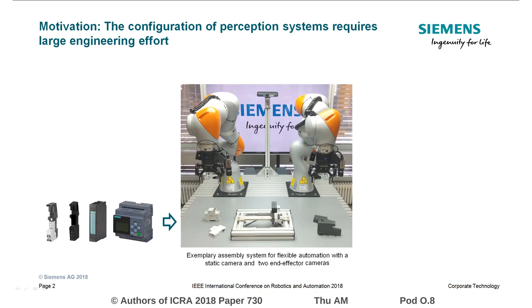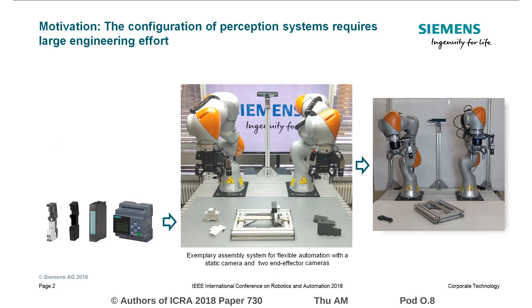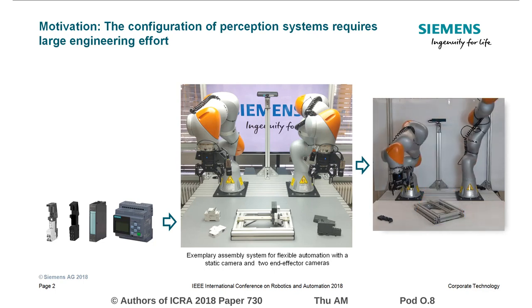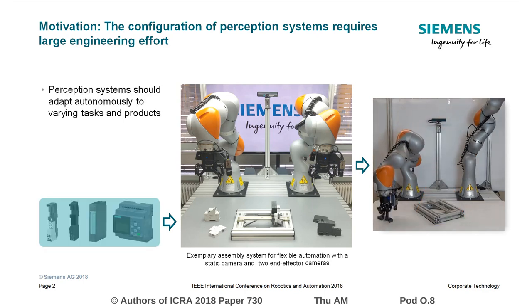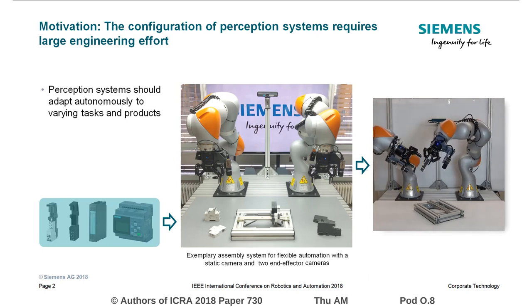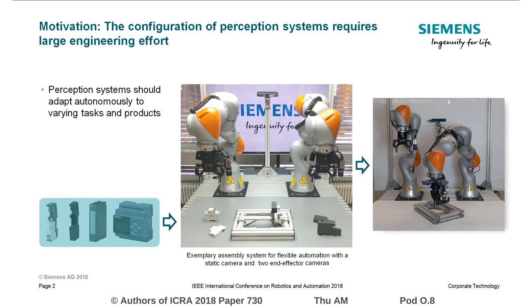The configuration of perception systems is a complex task that requires large manual engineering efforts. For instance, the depicted flexible assembly system, which is designed to autonomously assemble a variety of different products, needs a suitable perception system to be able to perform its task. The perception system should be able to adapt to different task requirements, such as the localization accuracy required for successful assembly of the electrical cabinet parts.